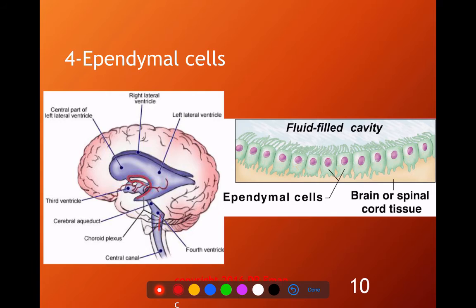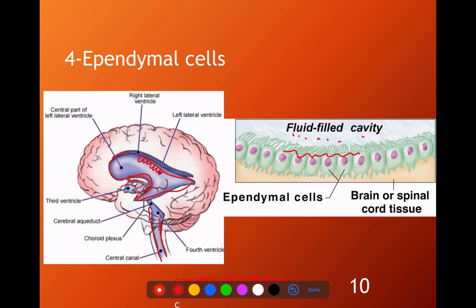Ependymal cells line the ventricles in the brain and the central canal in the spinal cord, lining these cavities and producing the CSF present within them.